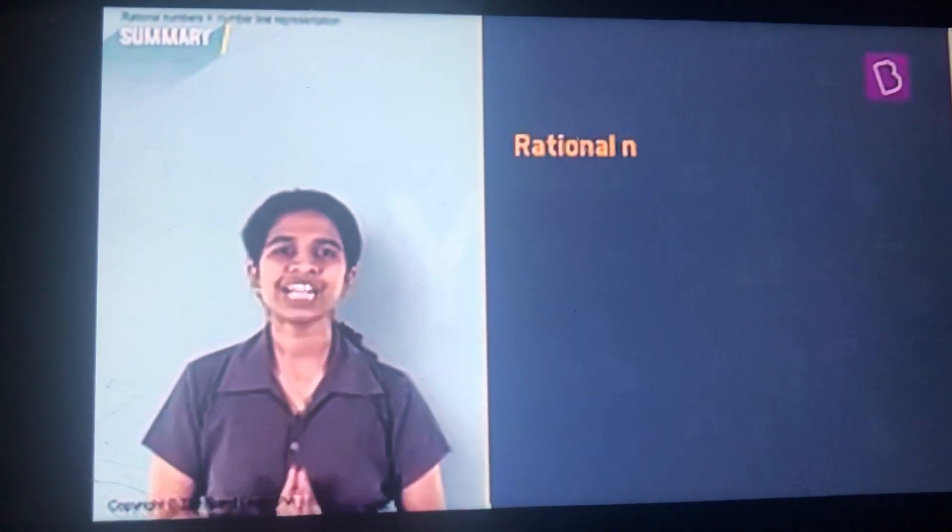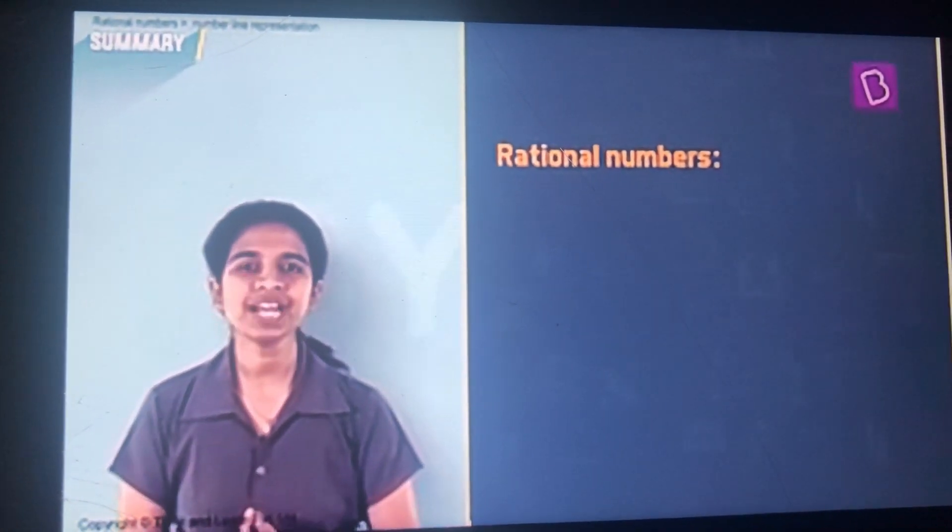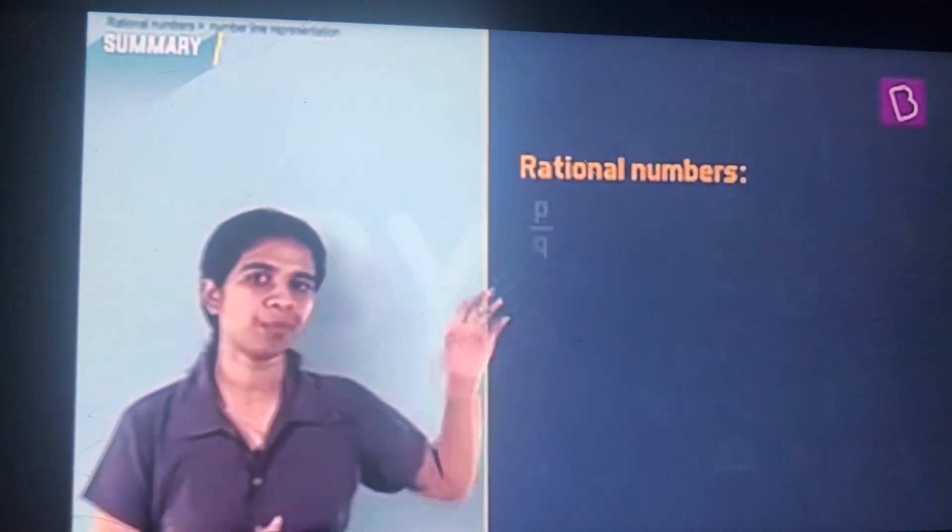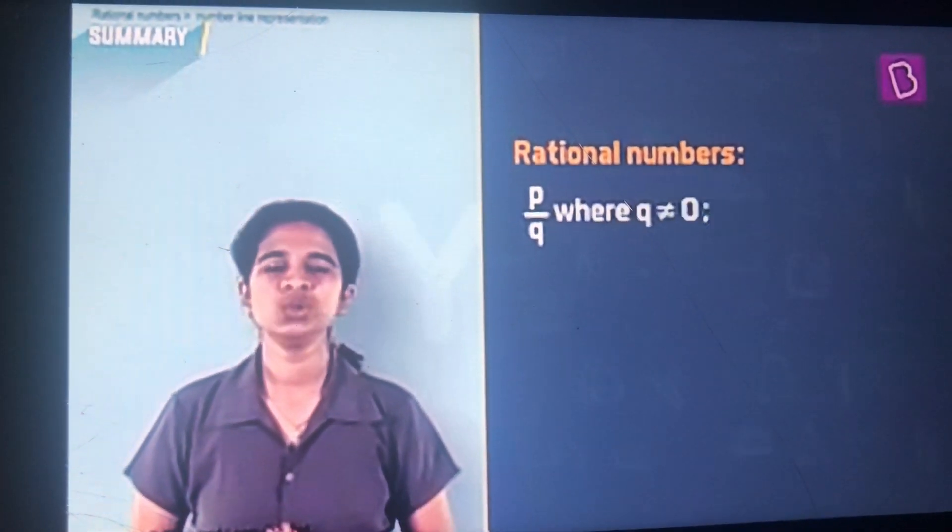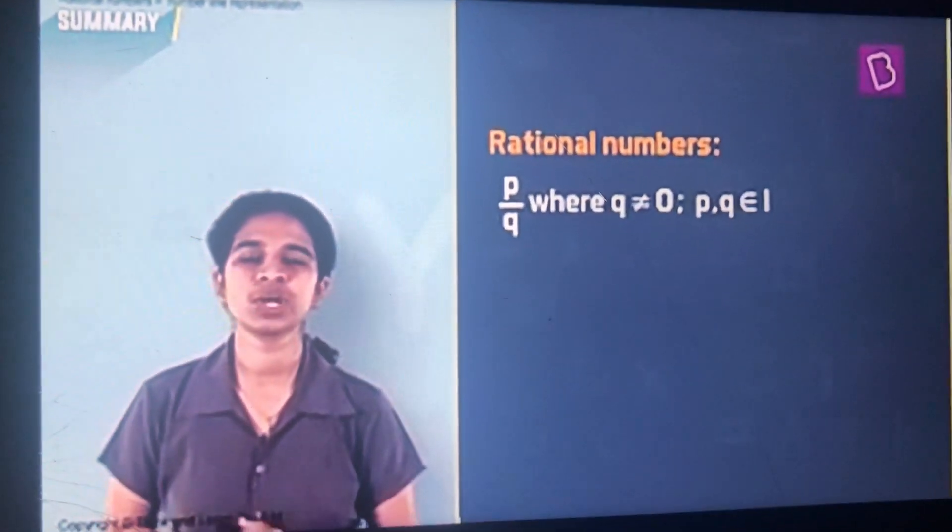A quick summary of what we've learned. Rational number is nothing but any number which can be expressed in the form P by Q, where Q is not equal to 0 and P and Q are both integers.